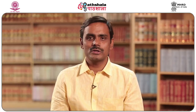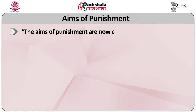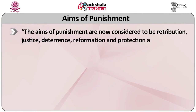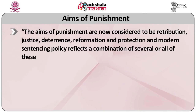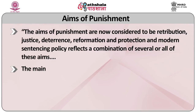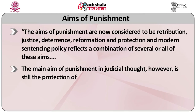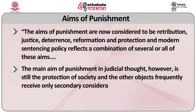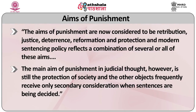There are thus rival opinions as to the need and efficacy of deterrent theory. It has been rightly observed that the aims of punishment are now considered to be retribution, justice, deterrence, reformation, and protection, and modern sentencing policy reflects a combination of several or all of these aims. The main aim of punishment in judicial thought, however, is still the protection of society, and the other objects frequently receive only secondary consideration when sentences are being decided.